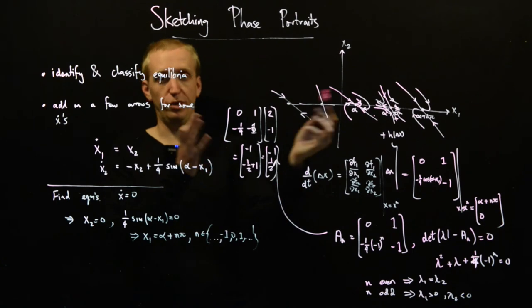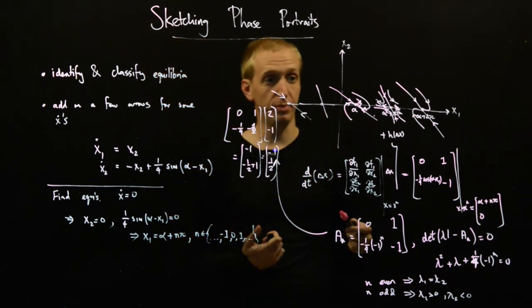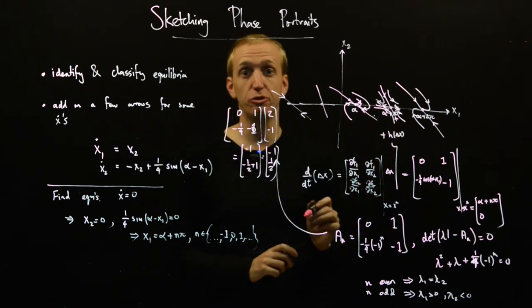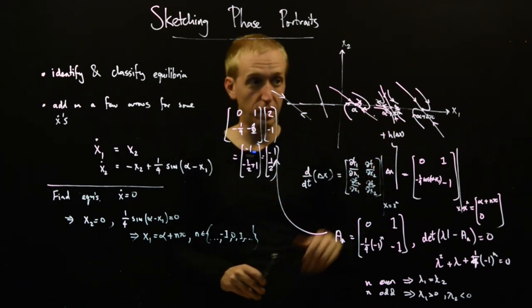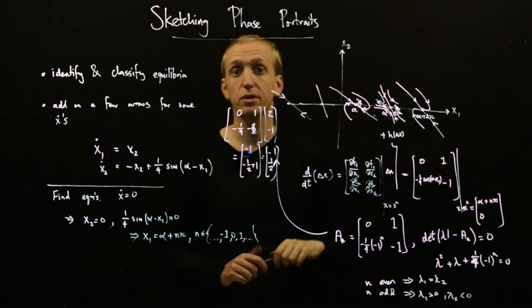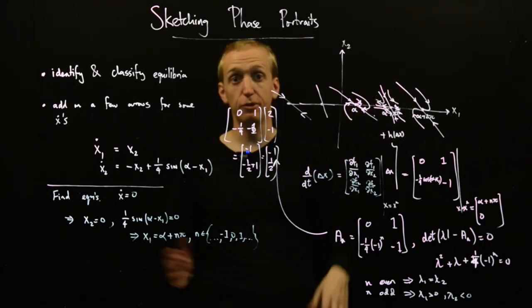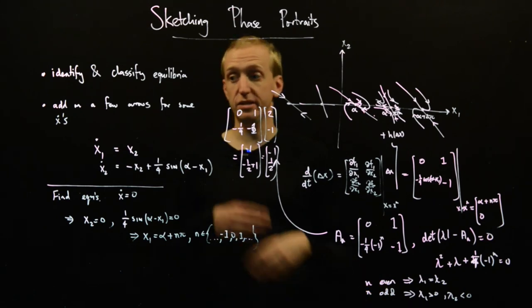And this is what you would do if you were to build a phase portrait by hand. And you could start to maybe guess what some of the intermediate trajectories look like. Or go and just sketch a few arrows corresponding to x dot of different points as well.